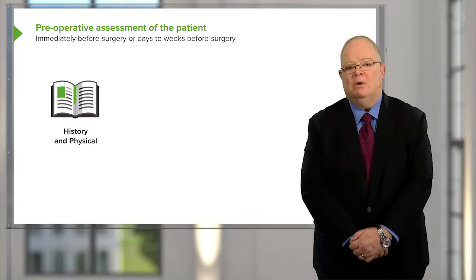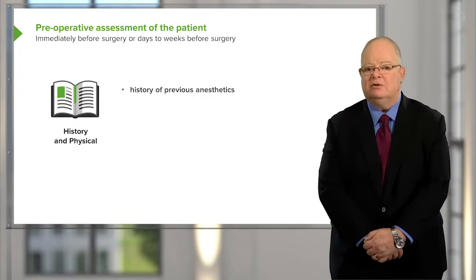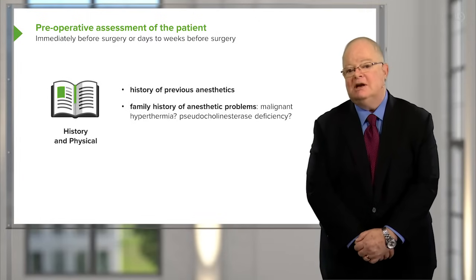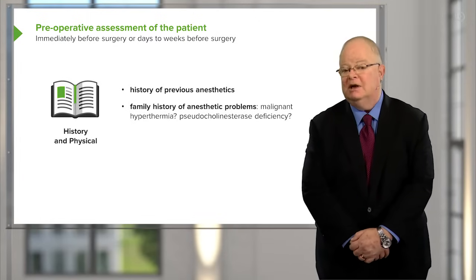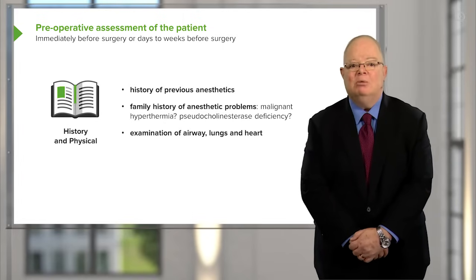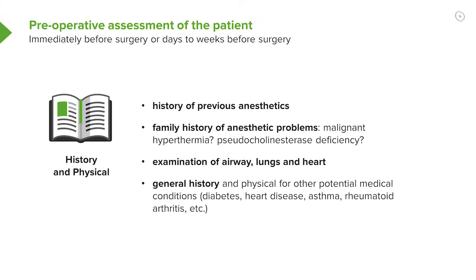So what do we ask about? What do we do when we see these patients prior to surgery? We get a full history of previous anesthetics and a family history of anesthetic problems, particularly if there's any history of malignant hyperthermia or pseudocholinesterase deficiency. We examine the airway, lungs, and heart, and we do a general history and physical for other potential medical conditions such as diabetes, heart disease, asthma, and rheumatoid arthritis. Almost any medical disease has some anesthetic implications.